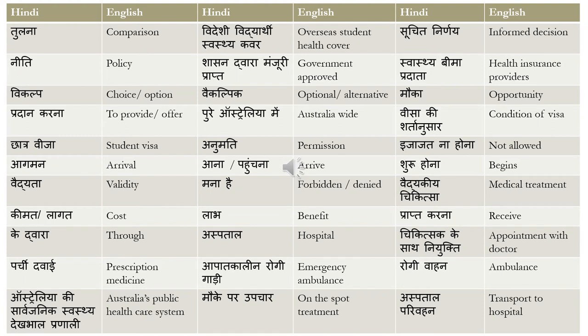'Apat kalin rogi gadi' means emergency ambulance — 'rogi gadi' or 'rogi vahan' is ambulance. 'Australia ki sarvagenic swastya dekbal pranali' means Australia's public health care system — 'sarvagenic' is public, 'swastya' is health, 'dekbal' is care, and 'pranali' is system. 'Mokke par upchar' means on-the-spot treatment — 'mokke par' is on the spot and 'upchar' is treatment; you can also say 'chikitsha' for treatment.